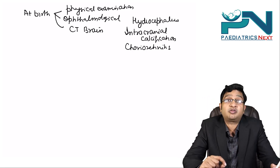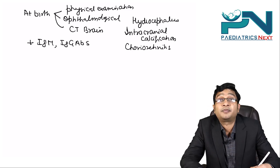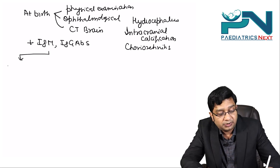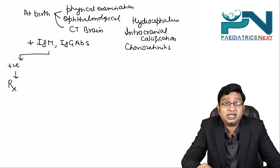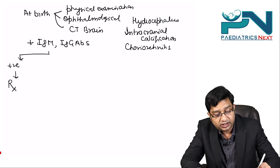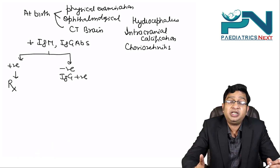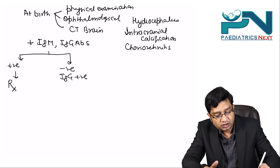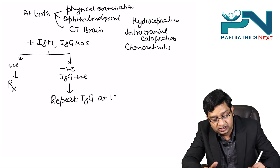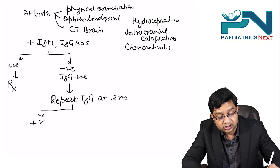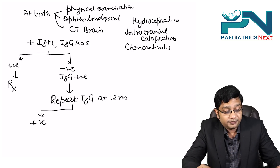You also check IgM and IgG antibodies. If IgM is positive, treatment is pyrimethamine plus sulfadiazine for 12 months. If IgM is negative but IgG is positive, this may represent maternally transferred antibodies, so you repeat the IgG at 12 months. If IgG is still positive at 12 months, it cannot be passively transferred maternal antibody.